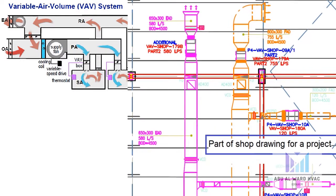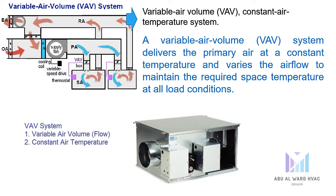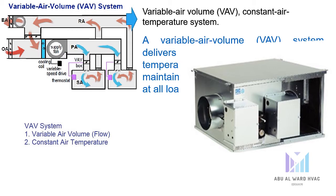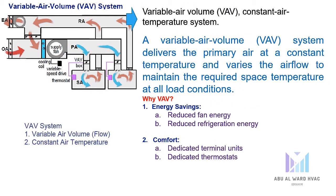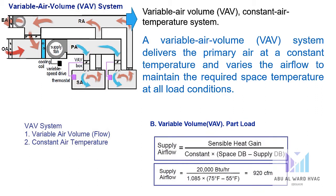Variable air volume (VAV) system has variable air volume and constant air temperature. A VAV system delivers the primary air at a constant temperature and varies the air flow to maintain the required space temperature at all load conditions. We use VAV for two reasons: energy savings — it has reduced fan energy and reduced refrigeration energy — and comfort, as it has dedicated terminal units and dedicated thermostats. At full load of 40,000 BTU we get 1,840 CFM, and at part load of 20,000 BTU we get 920 CFM.